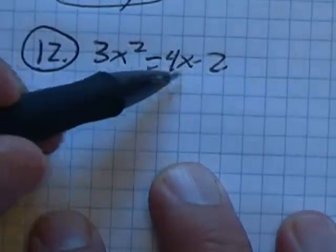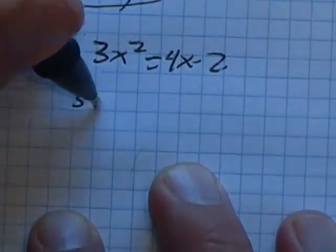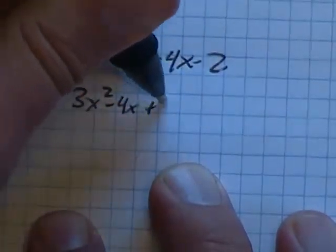So first thing I'm going to do is get it equal to zero, get everything on the same side. So I'm going to subtract 4x from both sides and add 2 to both sides.